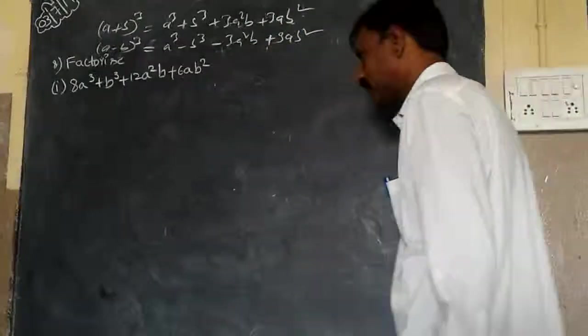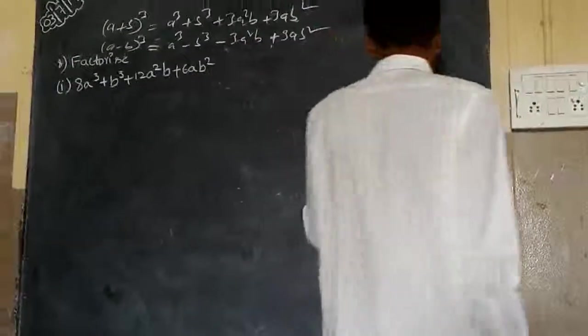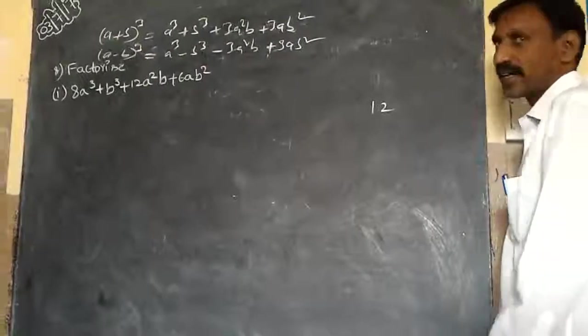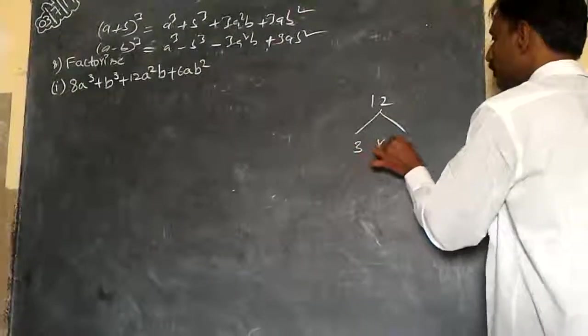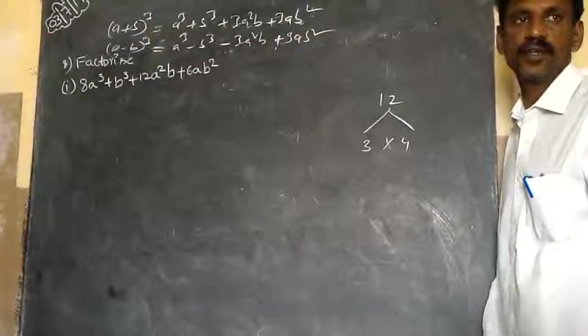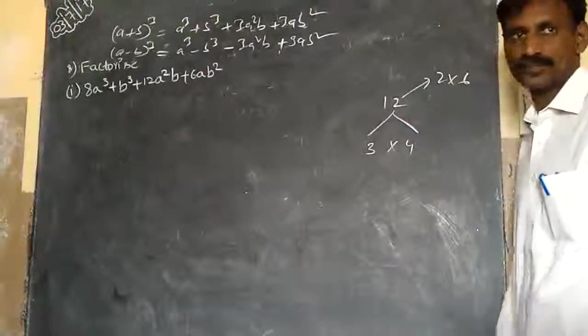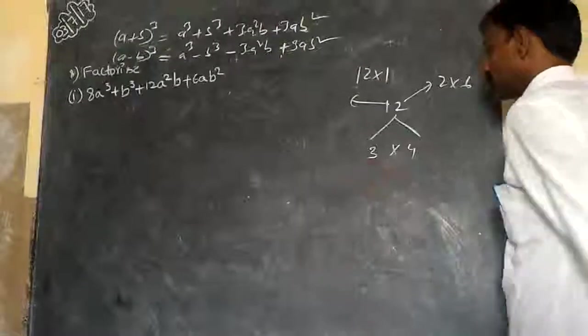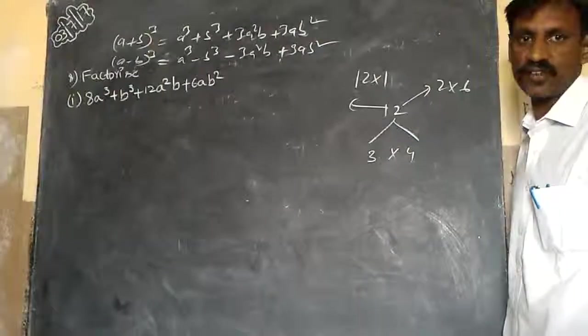I will give a best example to understand what is factorizing. I have 12. I can factorize this one. I will write it down into 3 times 4. This is nothing but factorizing 12. Or you can write 2 times 6 also. Or 12 times 1 also. How many ways you can factorize? Three ways.